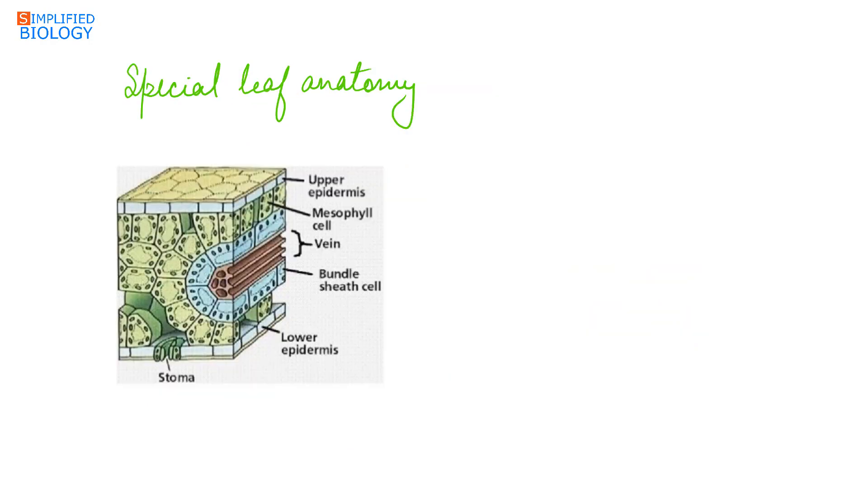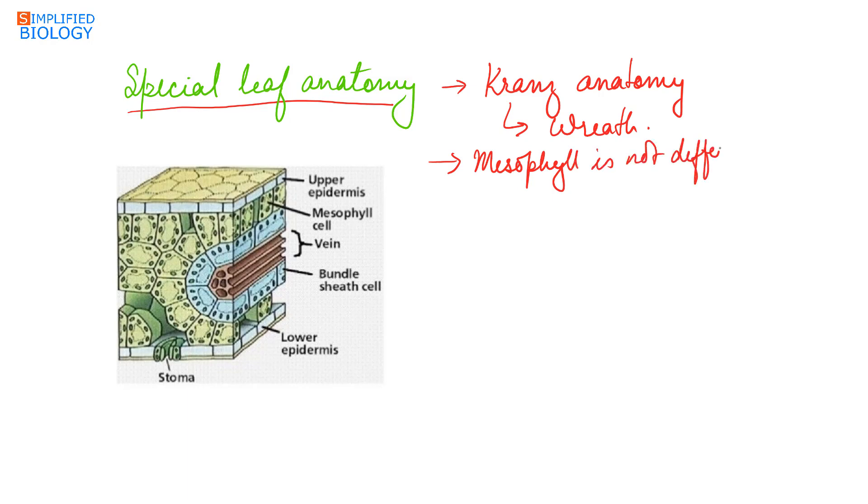These plants have special leaf anatomy. The leaves show Kranz anatomy. The name is given according to the arrangement of cells in the leaves. In these plants, the mesophyll is not differentiated. It is usually completely palisade, and surrounding vascular bundles are several layers of larger sized bundle sheath cells.